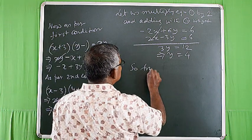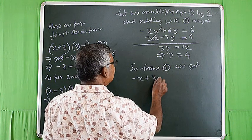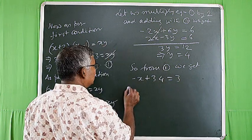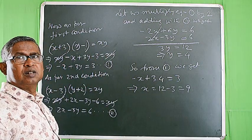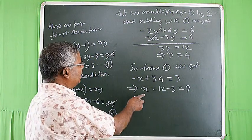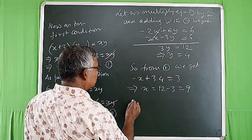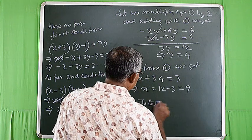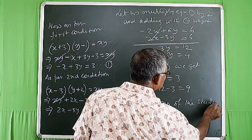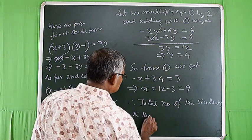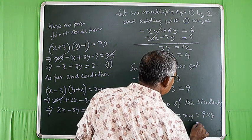Now let us substitute the value of y in equation number 1. From equation 1: -x + 3 × 4 = 3, which implies x = 12 - 3 = 9. So the number of students in each row is 9 and the number of rows is 4. Therefore total number of students in the class = x × y = 9 × 4 = 36.